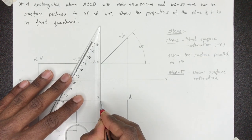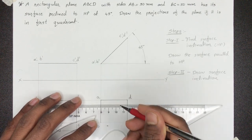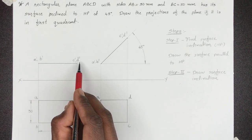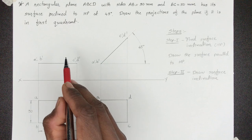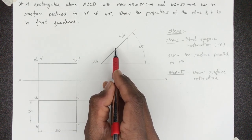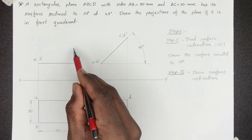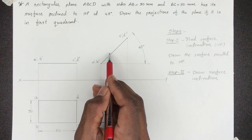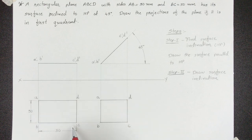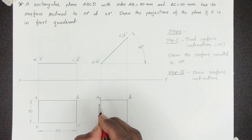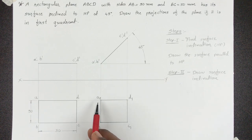Dark lines draw करके top view complete कर लीजिए. Step 1 में naming: front view में A, B, C, D और top view में A, B, C, D. Step 1 से Step 2 में जाओ — अगर shape change है तो name change करना है, otherwise same name repeat करना है. Front view में यह line सिर्फ rotate हुई है, shape change नहीं हुआ, तो same naming रखेंगे. Top view में Step 1 में true shape था और Step 2 में shape change हो गया, तो अगर shape change है तो extra '1' add करेंगे — naming होगी A1, B1, C1, D1. यह होगा हमारा final answer.